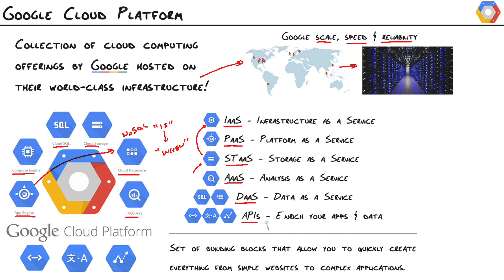Finally, Google has a metric ton of APIs that we can work with to easily enrich our applications and our data. All of their major products are exposed as APIs, as are many of their internal products — Gmail, Google+, Google Maps. They've also got Cloud Endpoints, which can easily enable you to create your own API backend so you can expose your data to web clients and mobile clients.